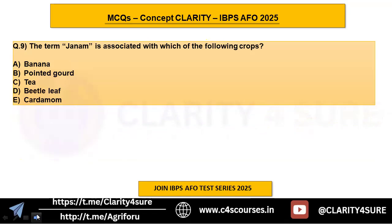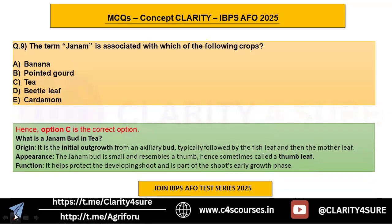The answer is option C, tea. A janum bud in tea is an initial outgrowth from an axillary bud, typically followed by a fish leaf and then the mother leaf. The janum bud is small and resembles a thumb, so it is also known as the thumb leaf. Its function is to protect the developing shoot as part of the shoot's early growth.